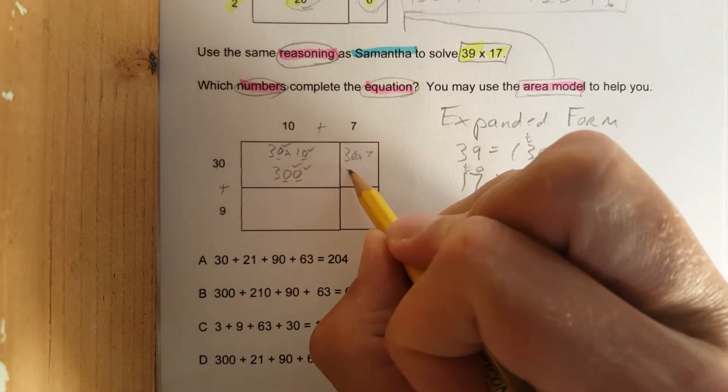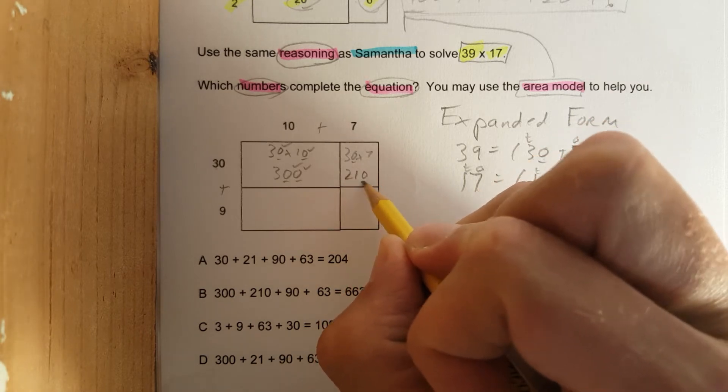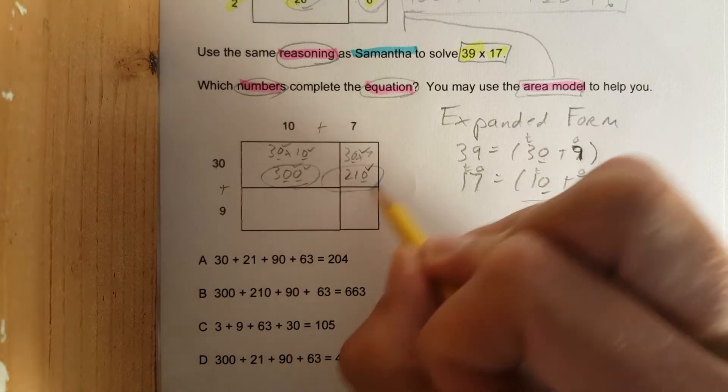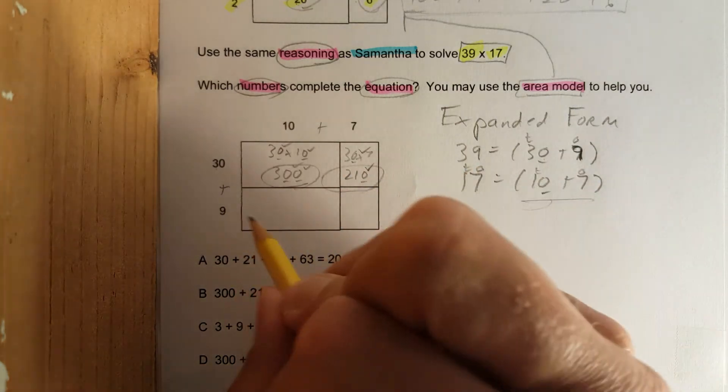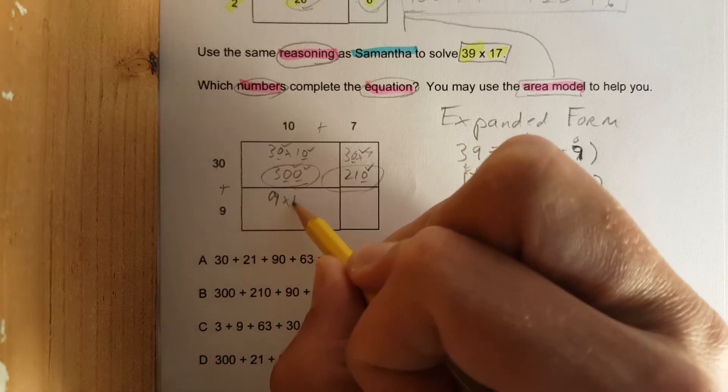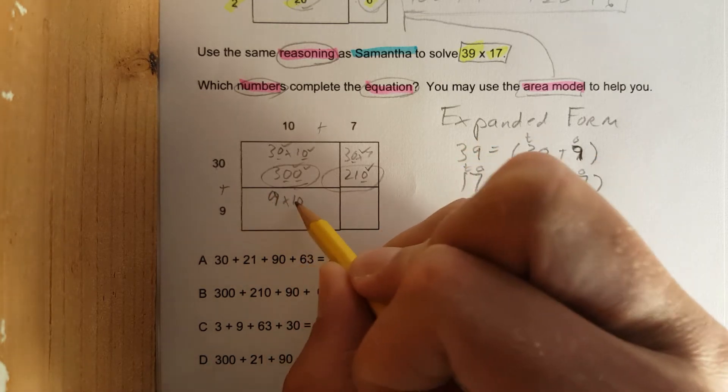This box down here, 9 times 10, sorry for the sloppiness. 9 times 1 is 9, I add a zero. Check check check. In the last box, 9 times 7 is 63.